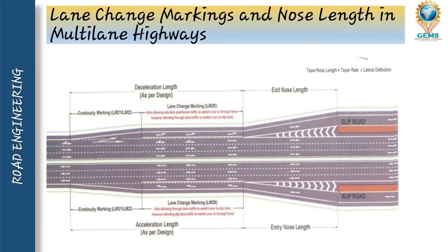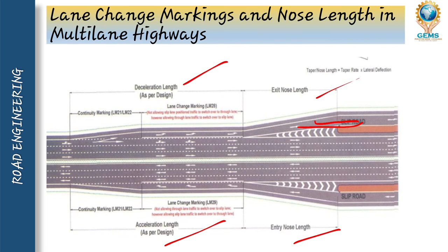Next is lane change marking and nose length in a multiple-lane highway. As you can see, multiple lanes are subdivided into branches, and as the road continues, the branches increase. This allows safety movement and provides a slip road for the public — vehicles that break down can stop and repair, and passengers can alight at these places. The marking shows entering nose length, accelerating length, exit nose length, and decelerating length.